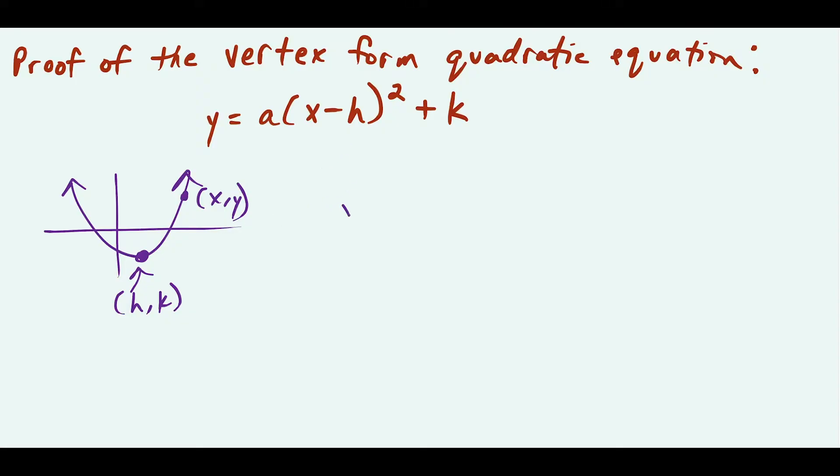So this proof is going to start off. We're going to assume that y equals ax squared plus bx plus c, where a, b, and c are real numbers and a is non-zero.